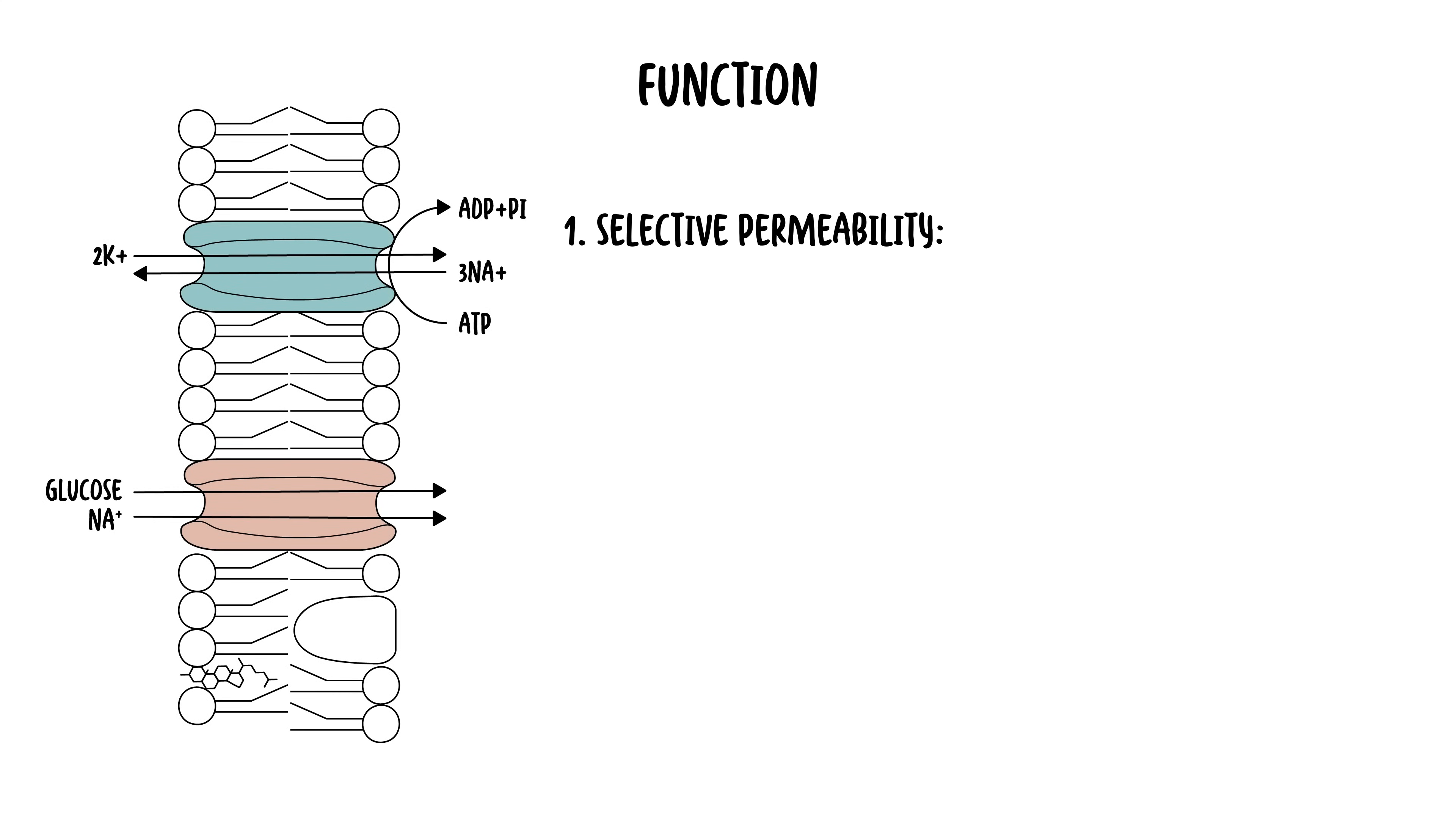Let's delve into some of the function. The cell membrane performs several critical functions essential for cellular survival and homeostasis. This includes having a selective permeability. The membrane regulates the entry and exit of substances, allowing essential molecules like nutrients and ions to enter while preventing the loss of vital components and protecting the cell from harmful substances.